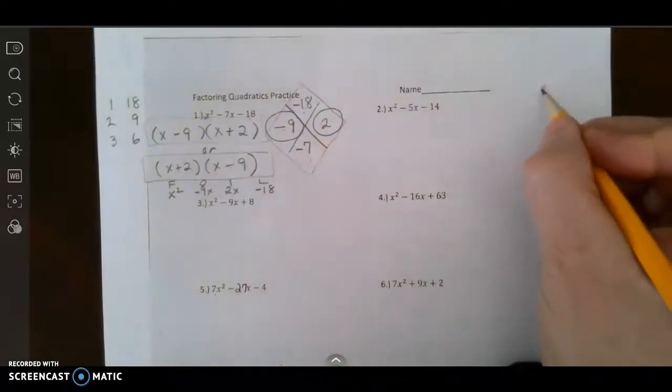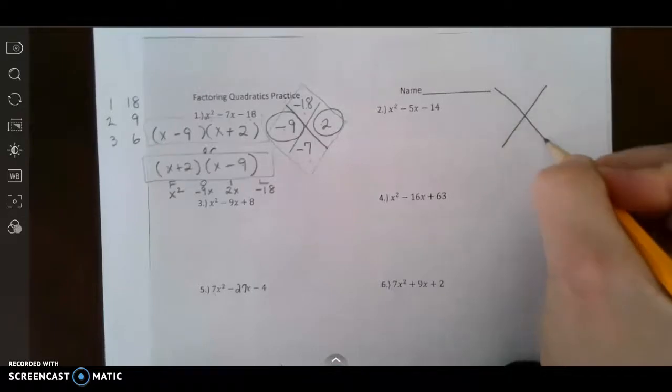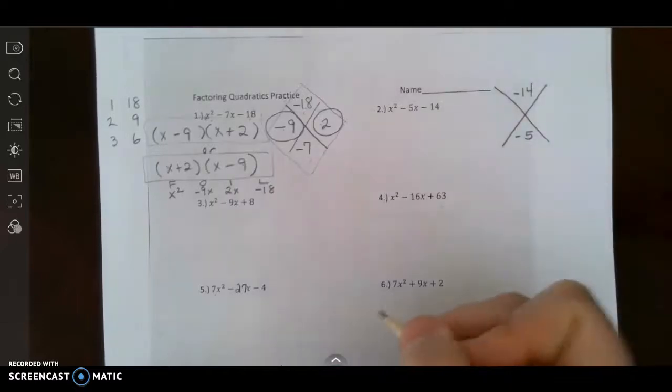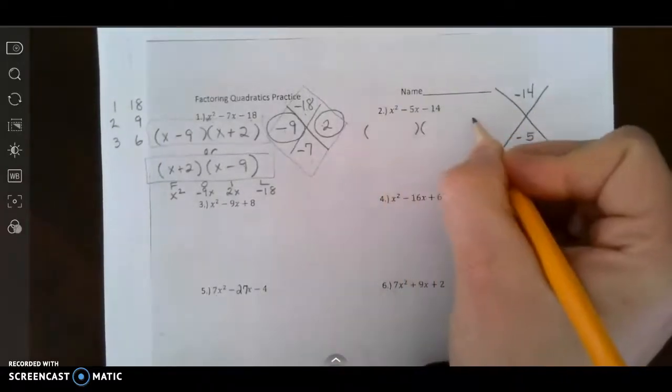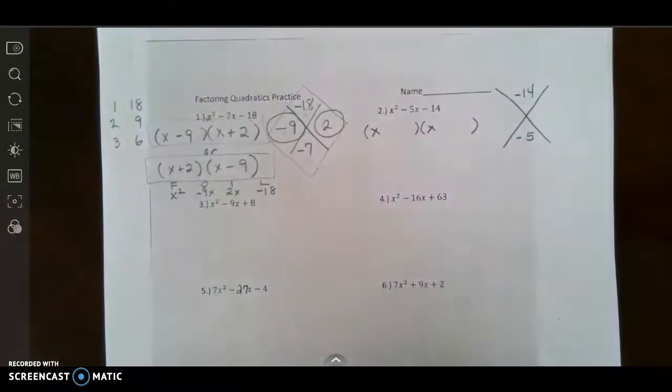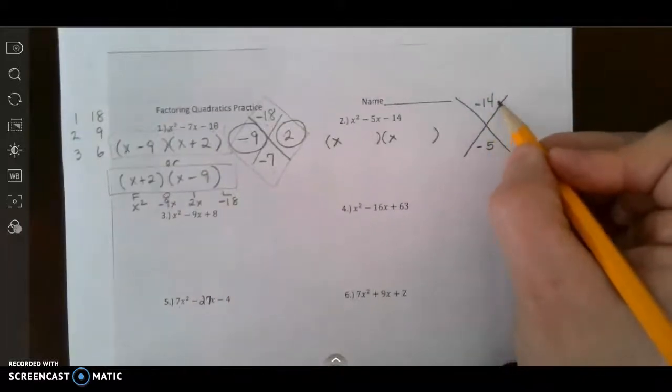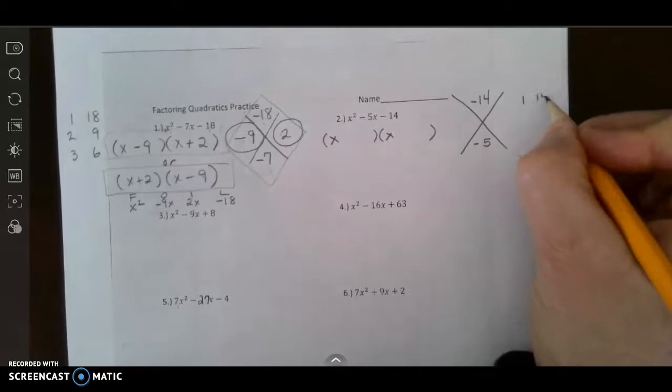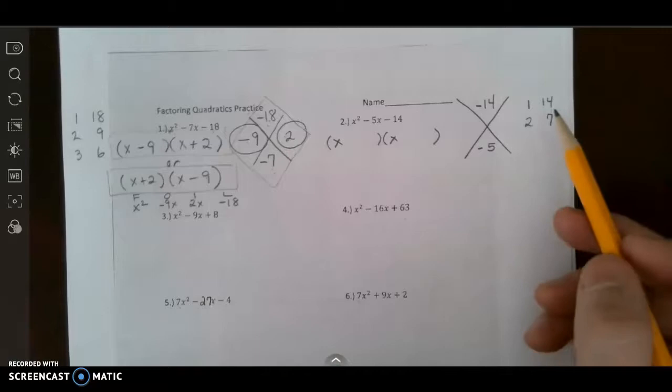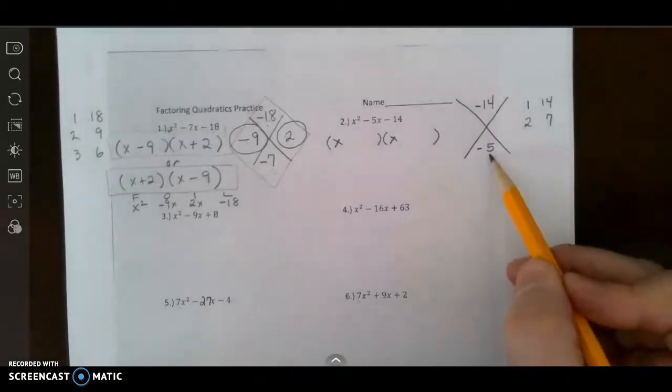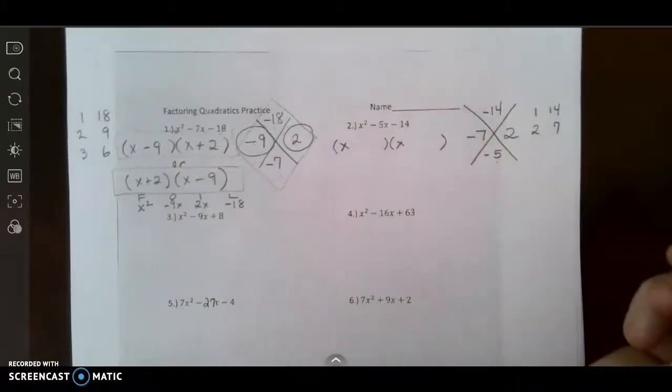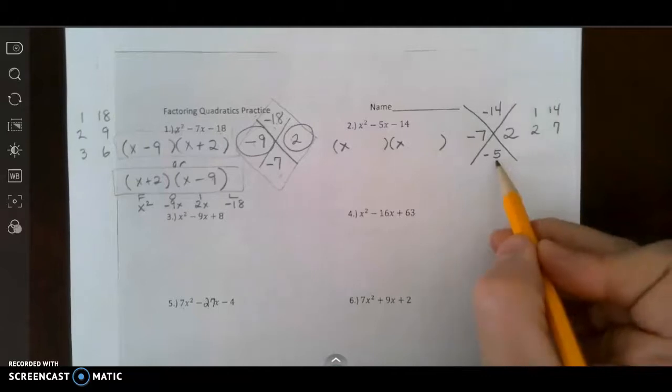All right let's do another one, let's do number two. My product of negative 14 and my sum of negative 5. I'm going to set up my two binomials. I know that I have to have an x and an x to get me that x squared, and I think about my factors of 14. I have 1 and 14 and I have 2 and 7 and that's it. So which of these can give me a sum of negative 5? I could have negative 7 and positive 2. That will give me a sum of negative 5.